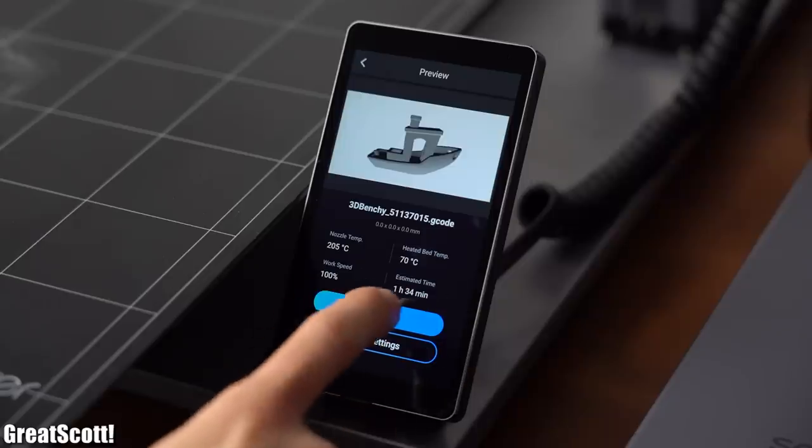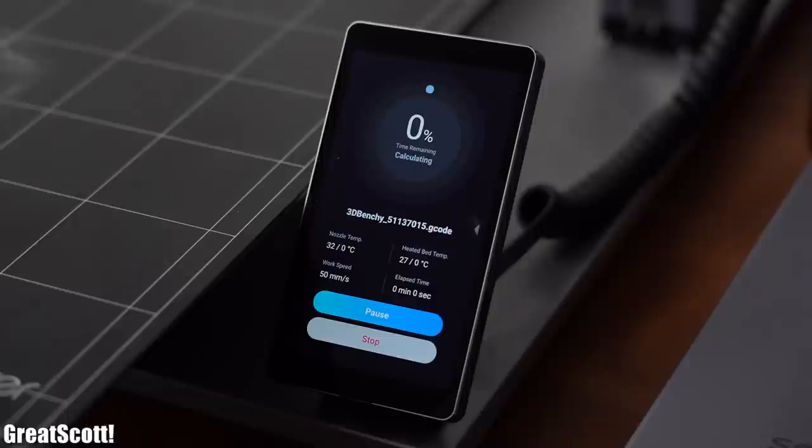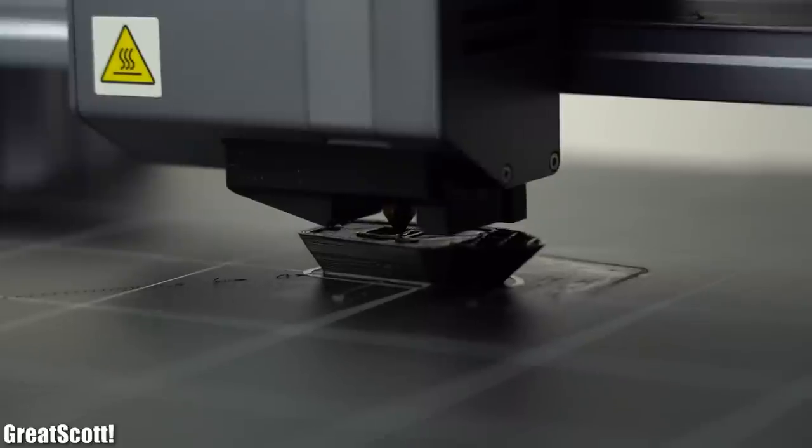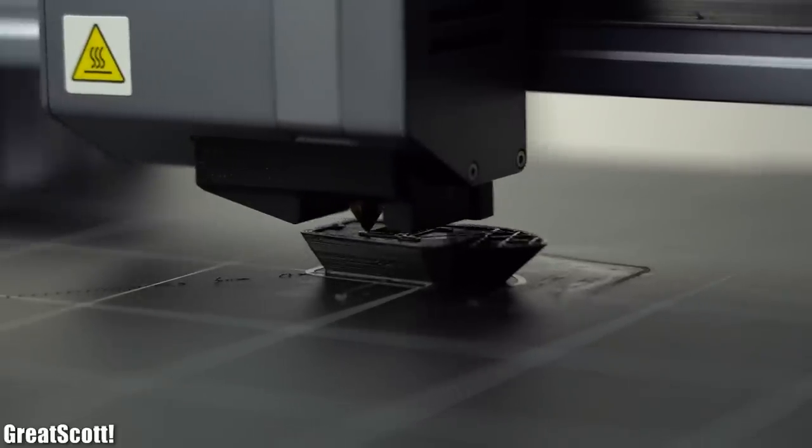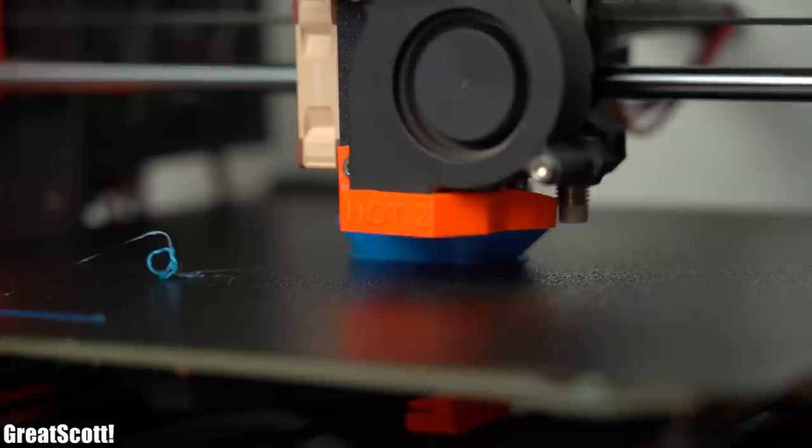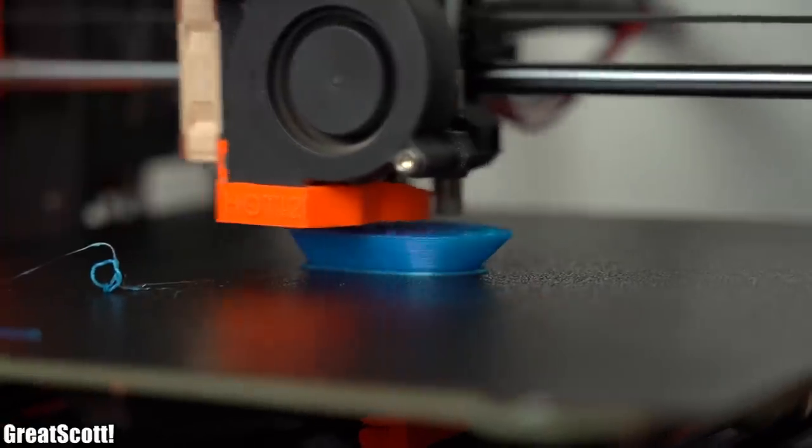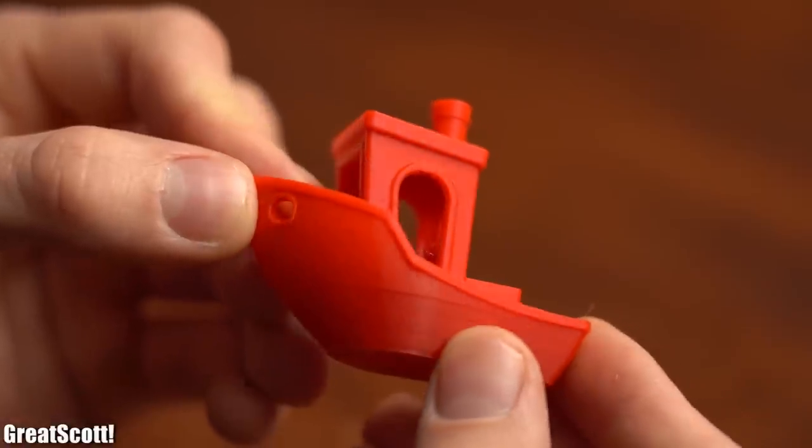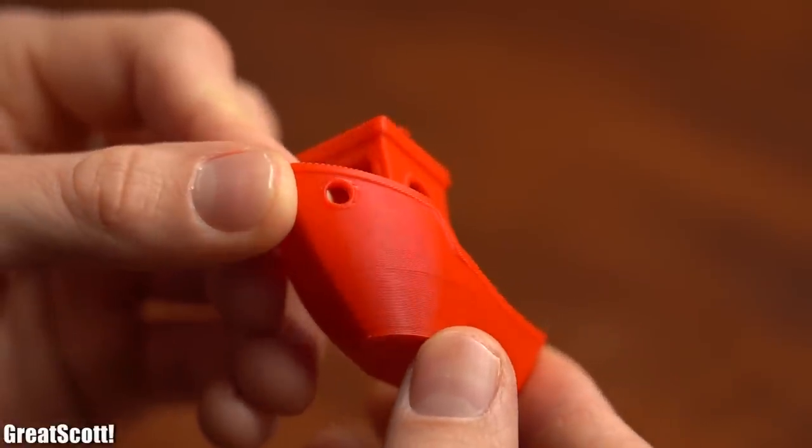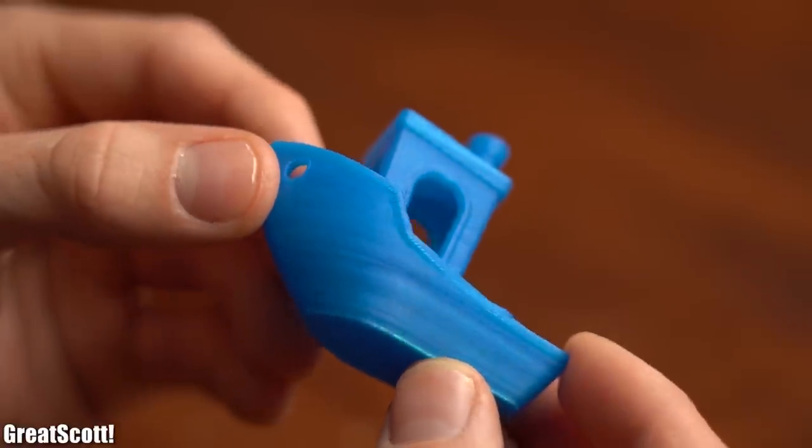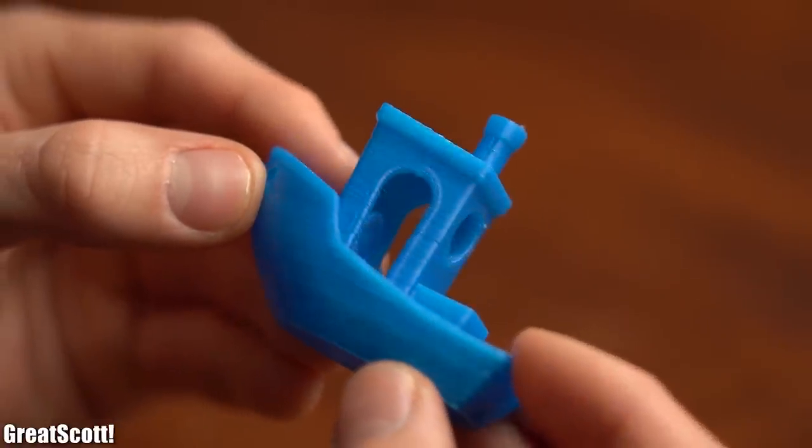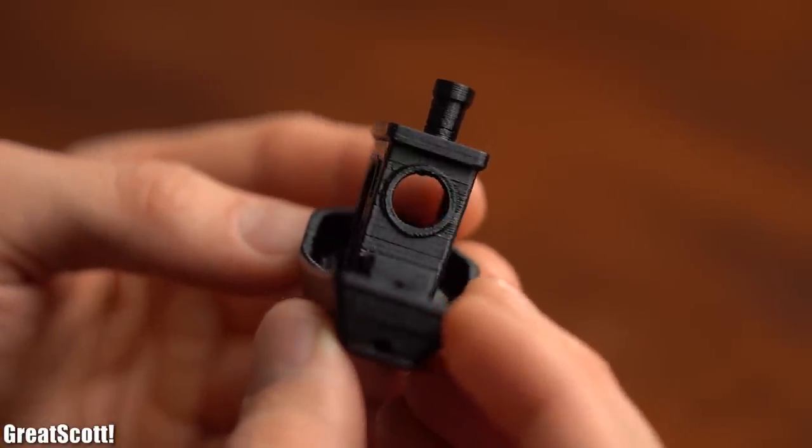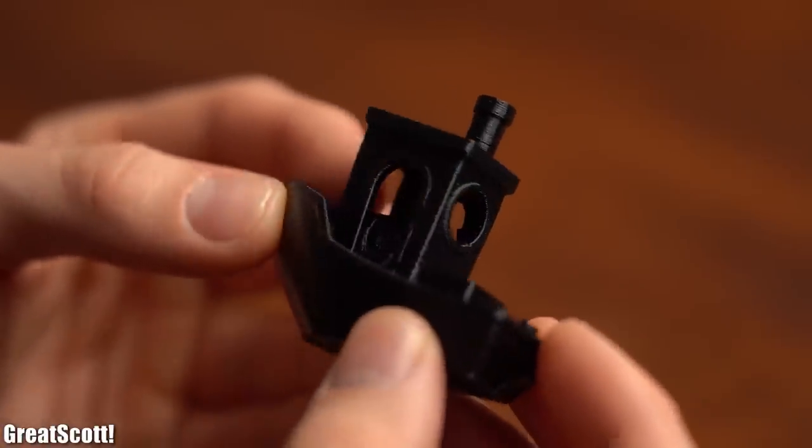And that means it was time for comparison print with the well known Benchy model. For that I tried to use pretty much the same print speed settings for all 3 machines. And after around 1.5 hour of printing the results were in. I have to say that the Prusa Mini one is pretty flawless followed by the MK3 one with minor imperfections and last but not least we got the Snapmaker one which is still good but there were some noticeable imperfections.